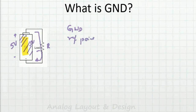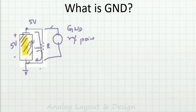If I ground the negative terminal, then if I measure the positive terminal it is 5 volts. It is a reference point — with respect to this negative point I will measure. I will put a voltmeter and it will show 5 volts.